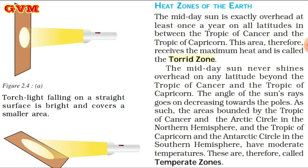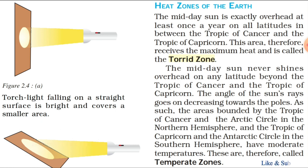Now we have to read about the heat zones of the Earth. The mid-day sun is exactly overhead at least once a year on all latitudes in between the Tropic of Cancer and the Tropic of Capricorn. This area therefore receives the maximum heat and is called the Torrid Zone.